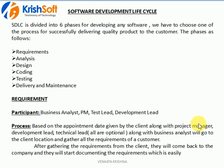In this video we are going to discuss about the Software Development Lifecycle: what are all the different phases, how the process works in real time, who are the different people involved in our project from beginning to end, and what are the different interview questions they may ask on SDLC. There are six phases to develop and deliver the application to the client: requirements, analysis, design, coding, testing, delivery, and maintenance.